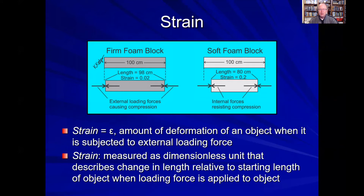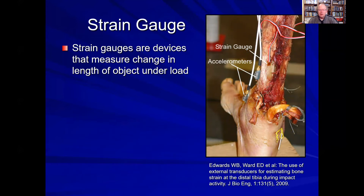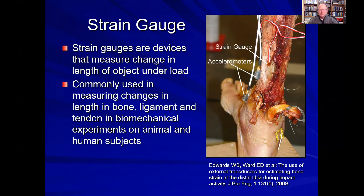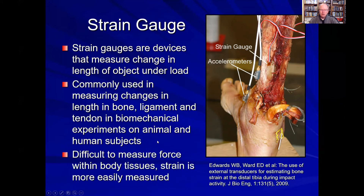So strain is a dimensionless number, and it measures the amount that the object is either lengthening or shortening due to an applied tension or compression load. Common examples of how we use strain to measure deformations in the foot and lower extremity include strain gauges, which measure the deformations of a tendon or a bone. Here is an example of a strain gauge placed in the tibia, where a transducer applied to the bone can actually measure the elongation or shortening of the bone under load. These strain gauges are commonly used to measure changes in ligament, tendon, bone, or cartilage under different experimental conditions, because it is difficult to measure force within the body but much easier to measure strain, and from those measurements we can estimate the forces.